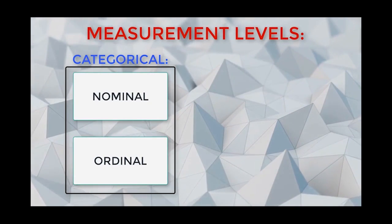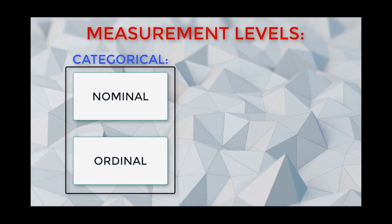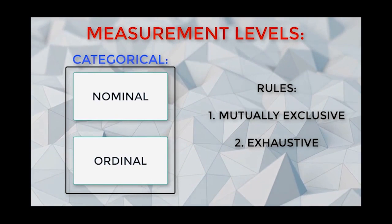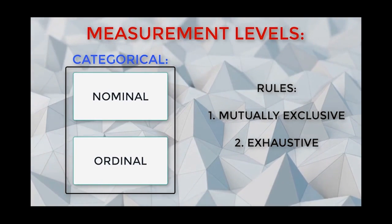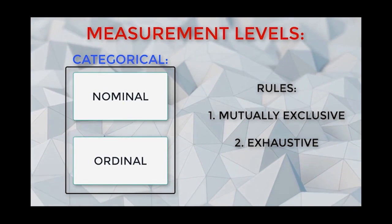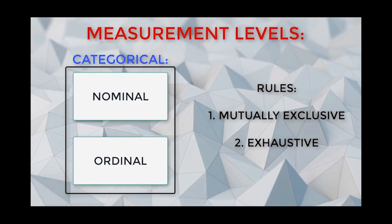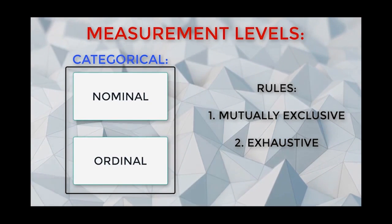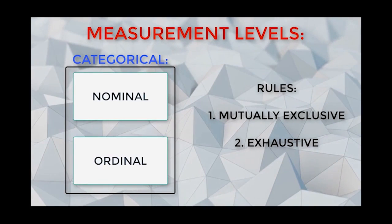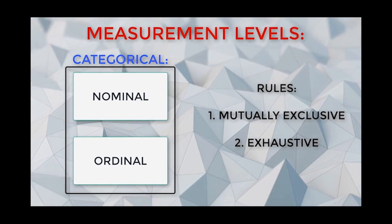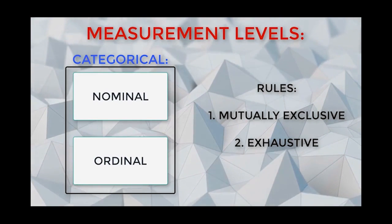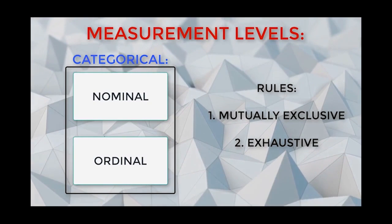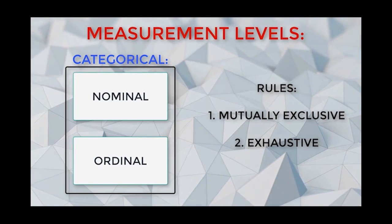As we discuss categorical measurement, it is important to acknowledge two governing rules. First, measurement items must be mutually exclusive — categories must be distinct and not overlap, so an individual should have only one place to mark. If multiple answers apply, the researcher should revise the item. Second, measurement must be exhaustive — there must be enough categories to capture all the data, meaning every respondent should have a place to put their answer. Violating either standard indicates a need for revision.